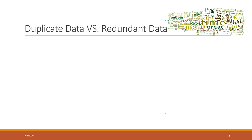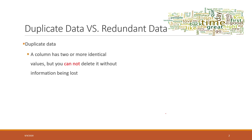First, let's talk about the concepts of redundant data and duplicate data, which are very important in relational databases. In relational databases, we try to reduce redundancy because it wastes storage. For duplicate data, a column may have two or more identical values, but you cannot delete them without losing information. If you delete those identical values you will lose information, so those are called duplicated data and you should not delete them.